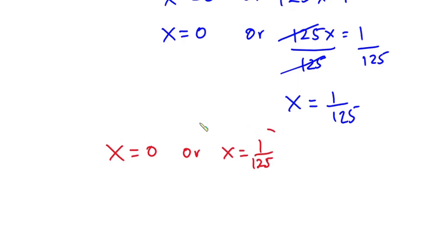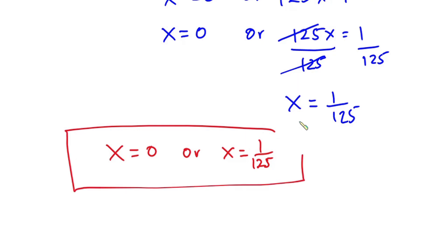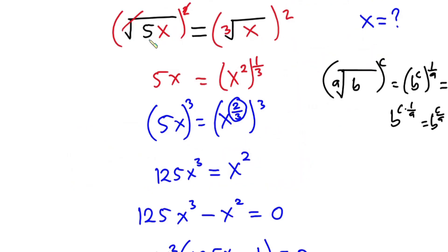So in all, x equals 0 or x equals 1 over 125. Now let's plug these values into the original equation to verify. If we put 0: we have the square root of 5 times 0, which is 0; the square root of 0 is 0. And the cube root of 0 is also 0, so 0 satisfies the equation.